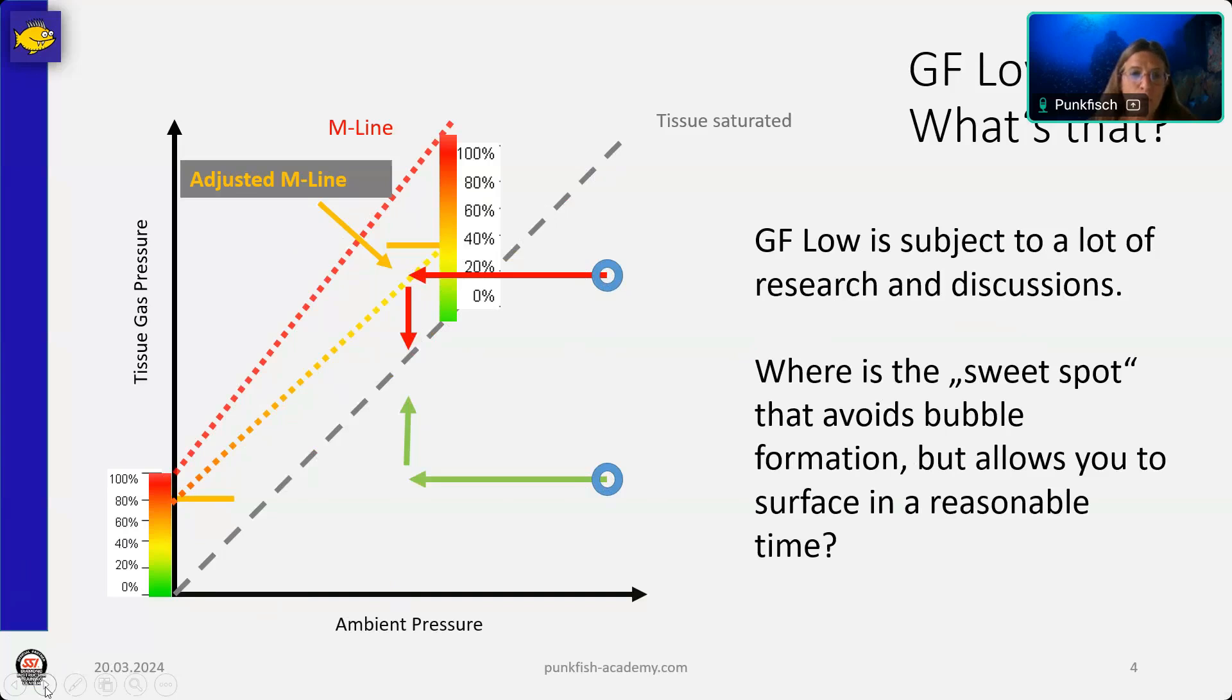So, we cannot really say where this spot is. What we can say is that there is a too low for gradient factor low. And setting it lower does not make your dive more conservative. It makes you accumulate more nitrogen throughout the dive, because your slower, like the medium tissues, are still saturating when you do your first stops. And you have to take this into account and either have a much longer decompression and stay longer at a shallower depth to decompress these tissues as well, or you accept a higher risk. Because at the end of the dive, you come out with a higher saturation than you could have reached in the same time with a higher gradient factor low.